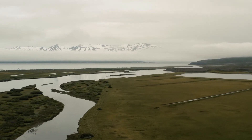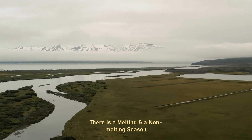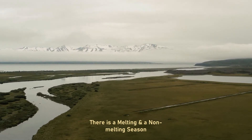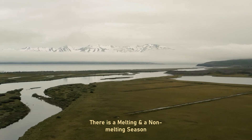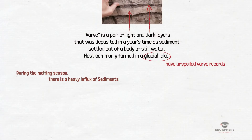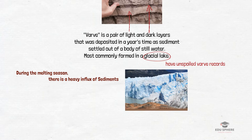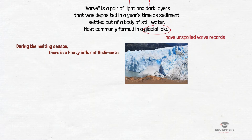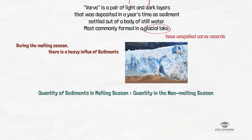In the glacial environments there is a melting season and a non-melting season. During the melting season there is usually a heavy influx of sediments caused by the melting and movement of the glacial snow and ice. These sediments tend to be coarser and the quantity of sediments is much greater than in the non-melting season.